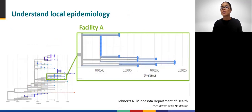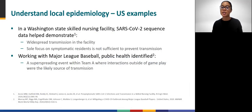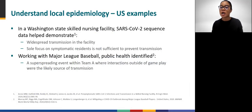Sequencing can also be used for highly localized cluster investigations. Two highlighted examples include an investigation in a Washington State Skilled Nursing Facility, where sequencing data helped demonstrate that widespread transmission had occurred and provided evidence that focusing solely on symptomatic residents is not sufficient to prevent transmission. The other example involves U.S. Major League Baseball, where sequencing data suggested a super-spreading event involving team members from a single team, and revealed that interactions outside the actual game were likely the source of transmission, helping narrow down the list of activities to focus on as potential promoters of transmission.